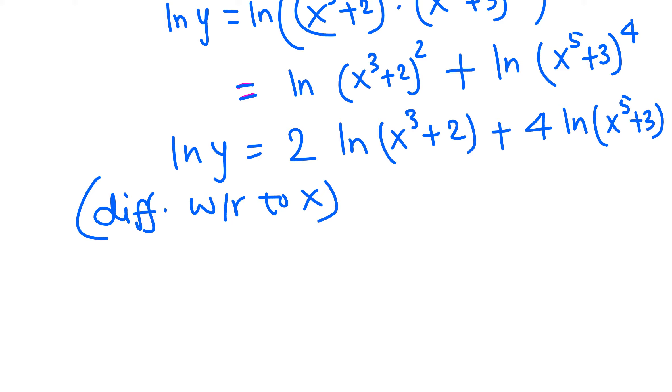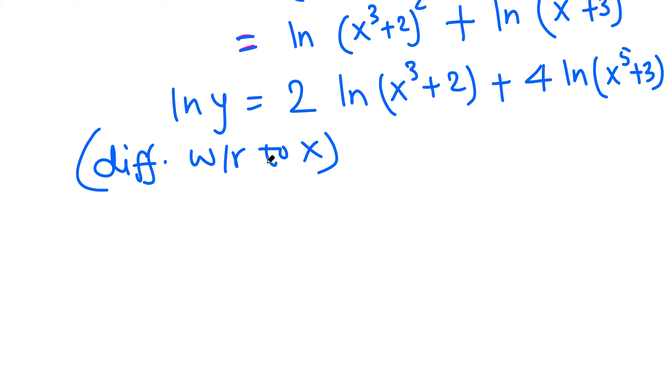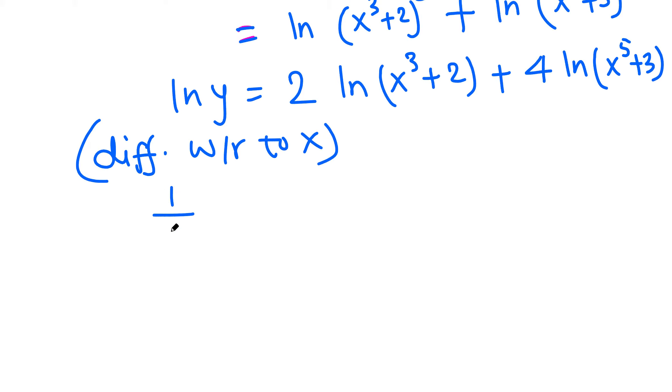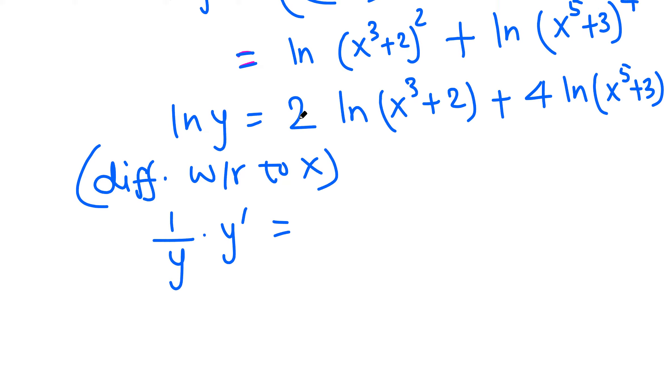That brings: the derivative of ln y with respect to x is 1 over y times the derivative of y, which is y prime. Eventually we need to isolate y prime because the question is to determine the derivative of y.